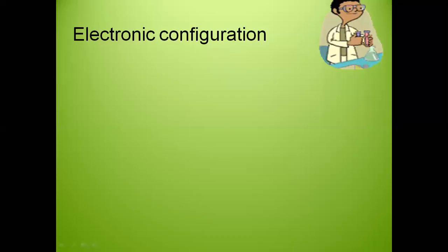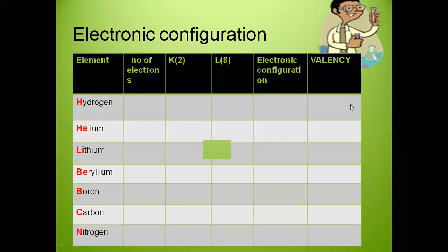What is the meaning of electronic configuration? A few students have raised their hands. Electronic configuration is the shell-wise distribution of electrons. Valency is related to this - valency is the number of electrons donated, accepted, or shared, which means the combining capacity of elements.